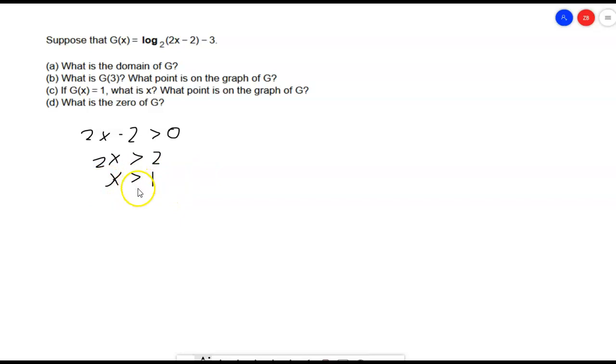So, x has to be strictly greater than 1, and we can write that in interval notation as starting at 1 and going all the way to positive infinity. All right, that is our A.